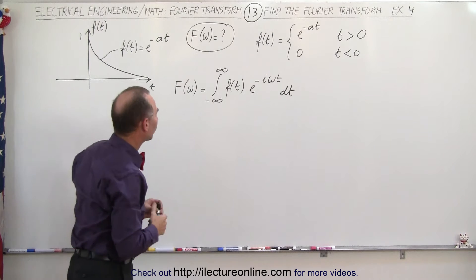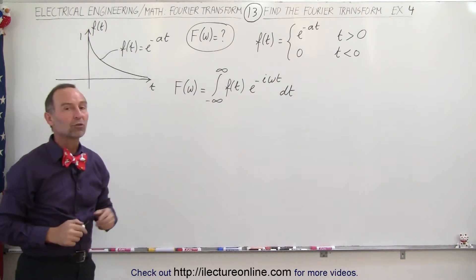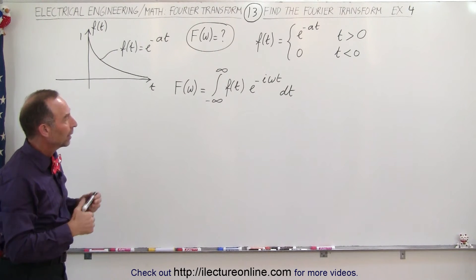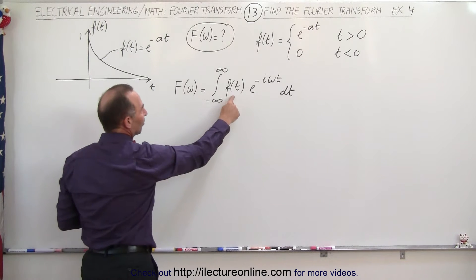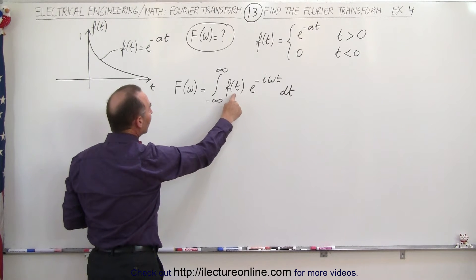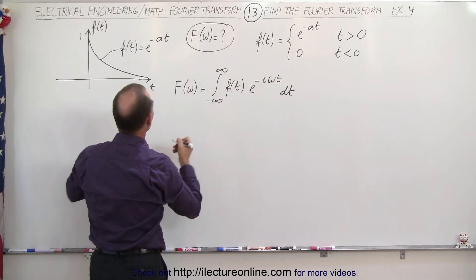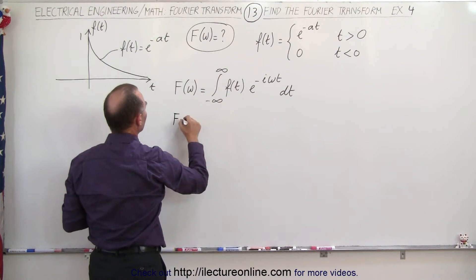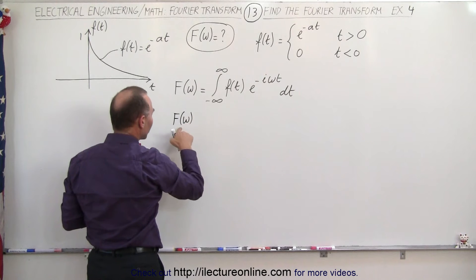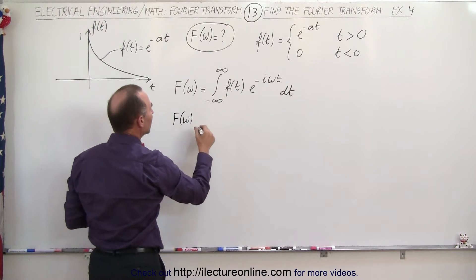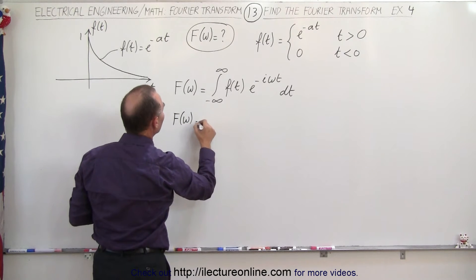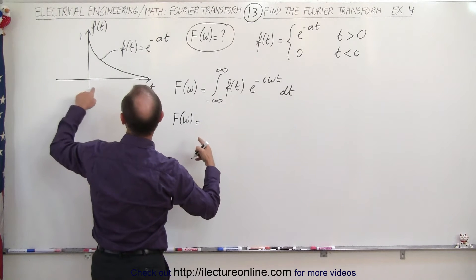We're trying to find the Fourier transform, and this is the general equation of the Fourier transform. In this case, the function as a function of time is not a constant, it's actually a variable. So let's go ahead and rewrite this function. The Fourier transform with respect to the frequency is going to be equal to - now the limits of integration